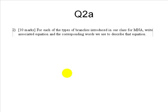Now for question 2. For each one of the branches defined in our class in M&A, write the associated equation and the corresponding words that we use to describe that equation. Well, there are five types of branches that we introduced.